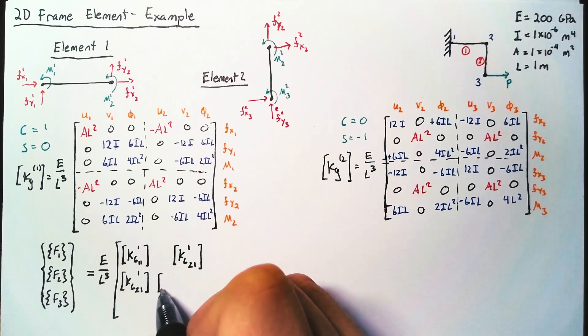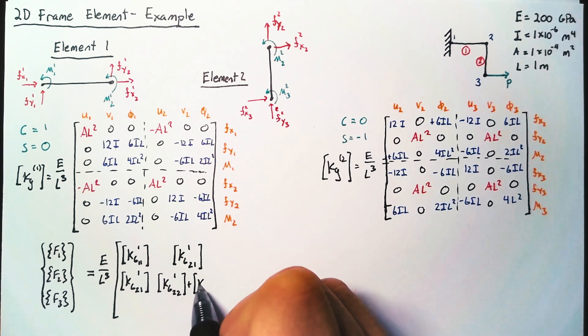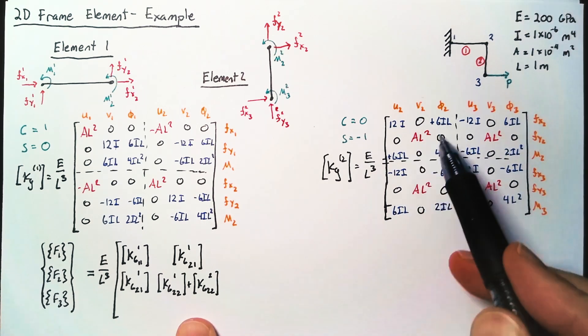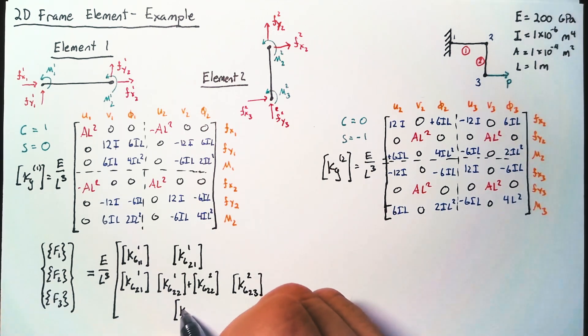And then finally, for this 2,2 spot, we're actually going to have two submatrices. We'll have this piece and this piece, which will be added together. So that will be KG22 from element 1 plus KG22 from element 2. And then we have the 2,2 spot taken care of. And so now we just need to write the 2,3, 3,2, and 3,3 spots.